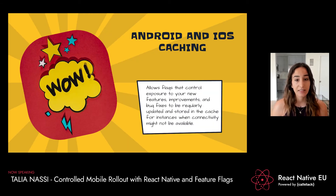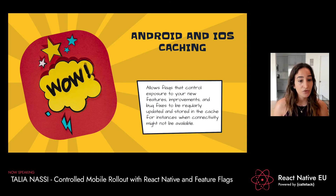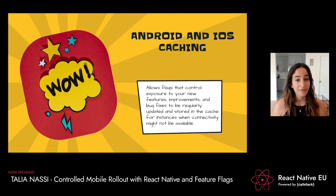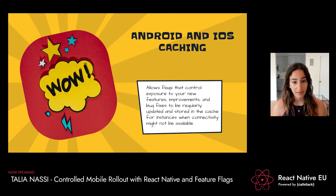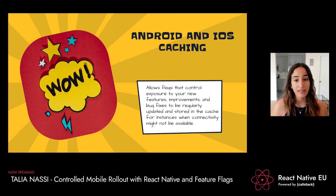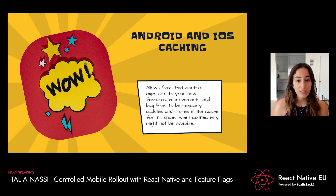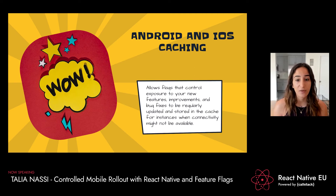Android, iOS, and mobile caching allows flags that control exposure to new features, improvements, and bug fixes to be regularly updated and stored in the cache for instances when connectivity might not be available. By caching app data locally on each device, you allow end users to access all functionality even without internet. This is really important for mobile development, especially with React Native — great for users who travel internationally, don't always have great network connection, or are frequently outside their data service area. It also speeds up load time in areas where connectivity is limited, because the app can load from the cache while awaiting updates from a slower data connection.